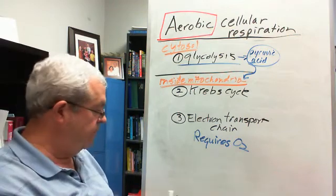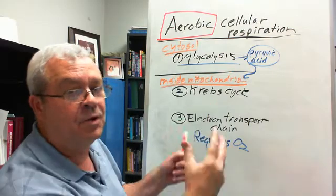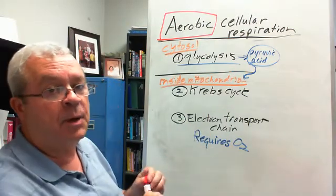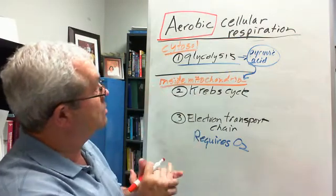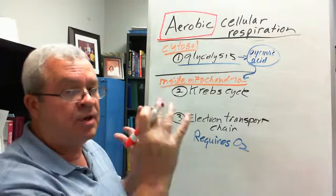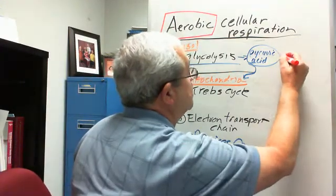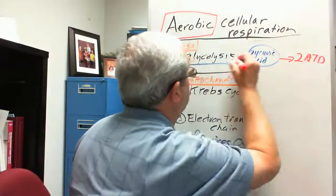And then a very important aspect of this - a crucial, key aspect - is the charging up of ATP. Each one of these stages in aerobic cellular respiration charges up a certain number of ATP molecules. Glycolysis charges up how many? Two ATPs.